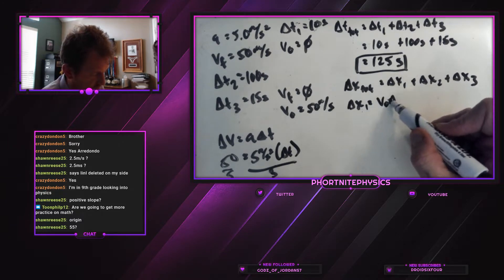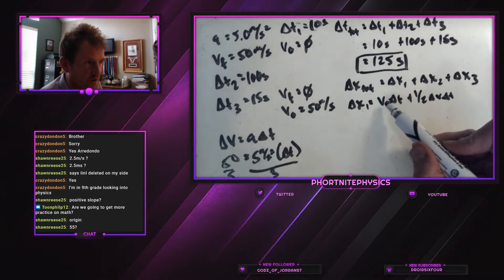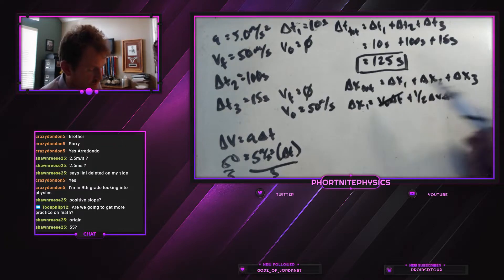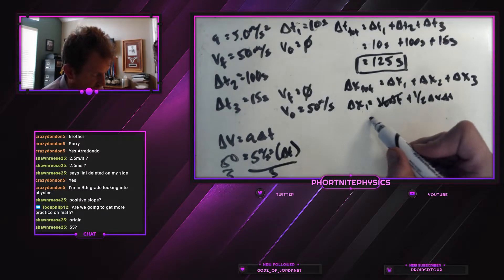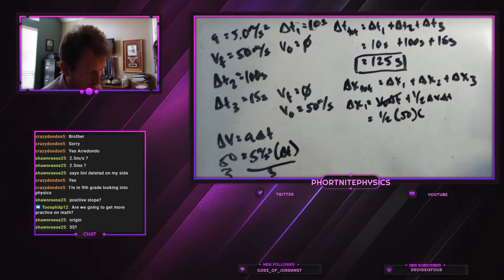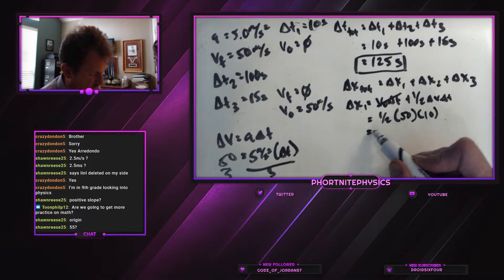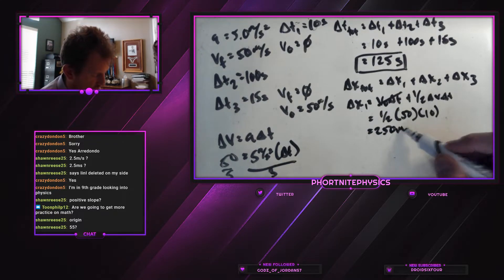Delta x1 equals v0 delta t plus 1 half delta v delta t. Now, initial velocity is zero, so that term is just zero. And then the rest is one half multiplied by delta v, which is 50, multiplied by our time, which is 10. So 50 times 10 is 500. One half of that is 250. 250 meters. Delta x1.